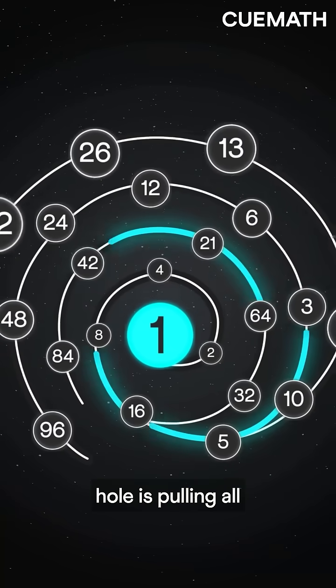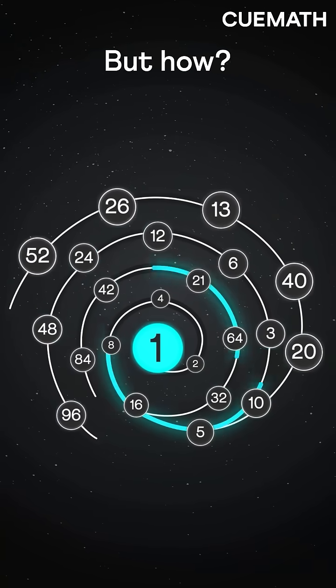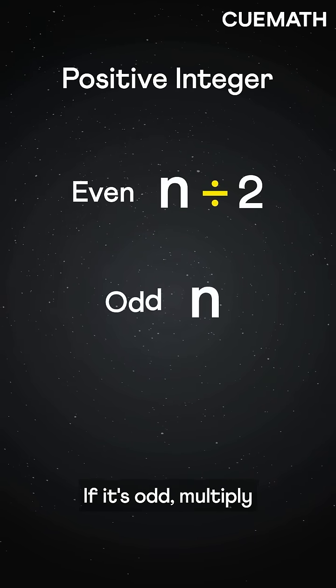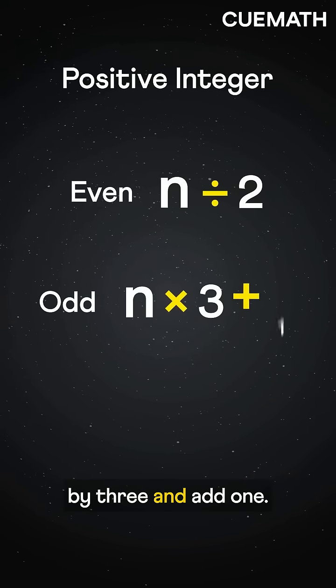This mathematical black hole is pulling all numbers toward one, but how? Take any positive integer. If it's even, divide it by two. If it's odd, multiply by three and add one.